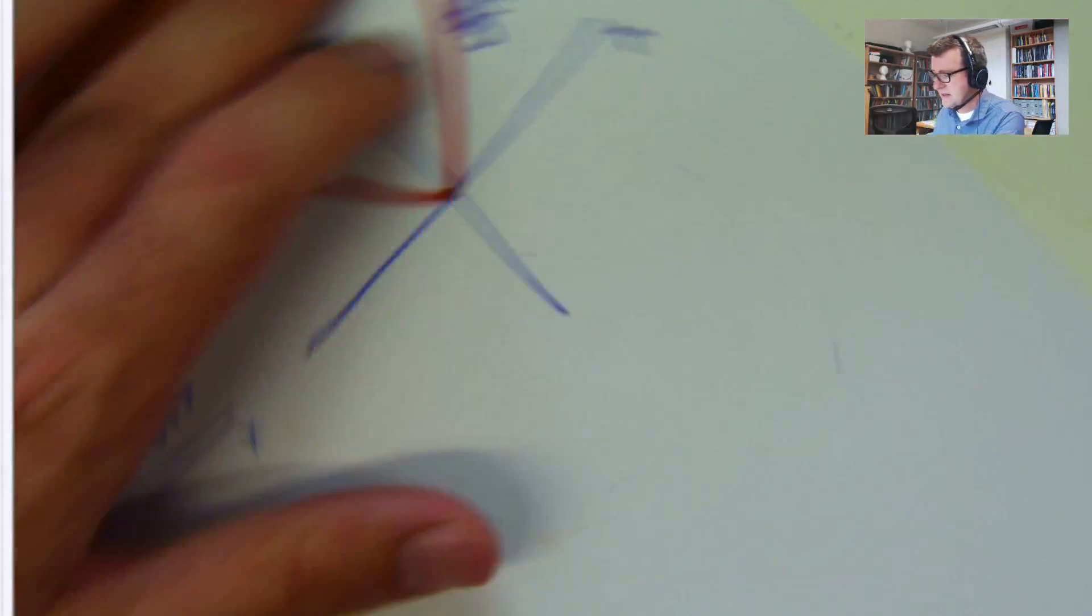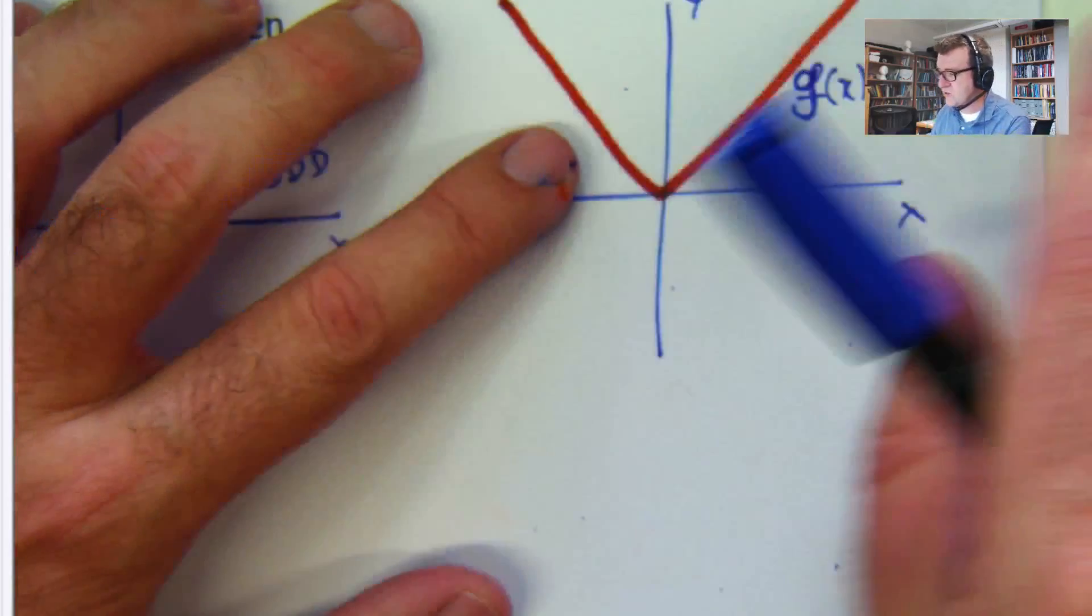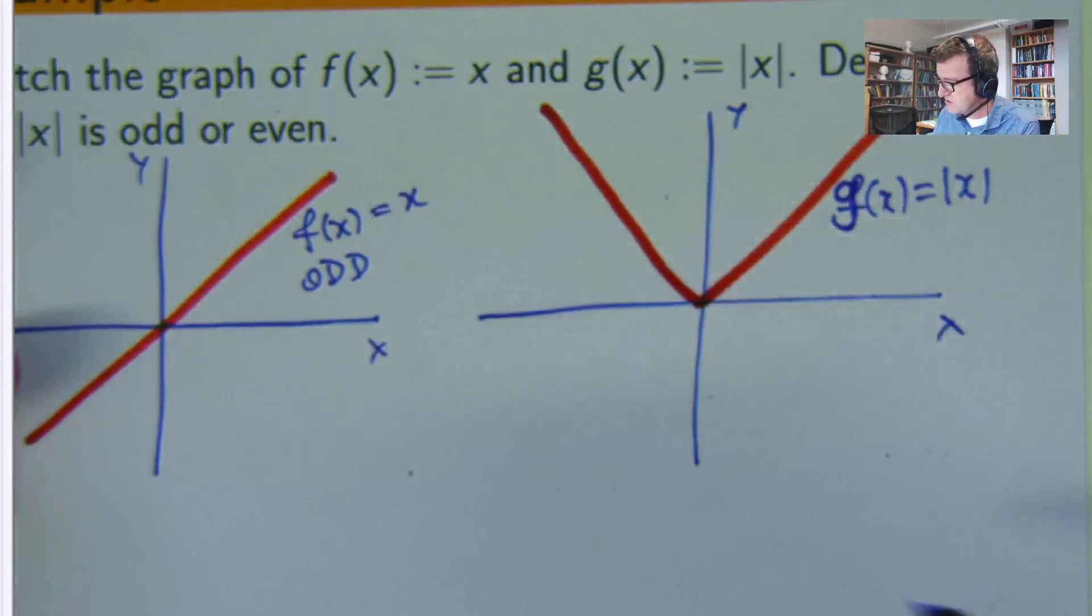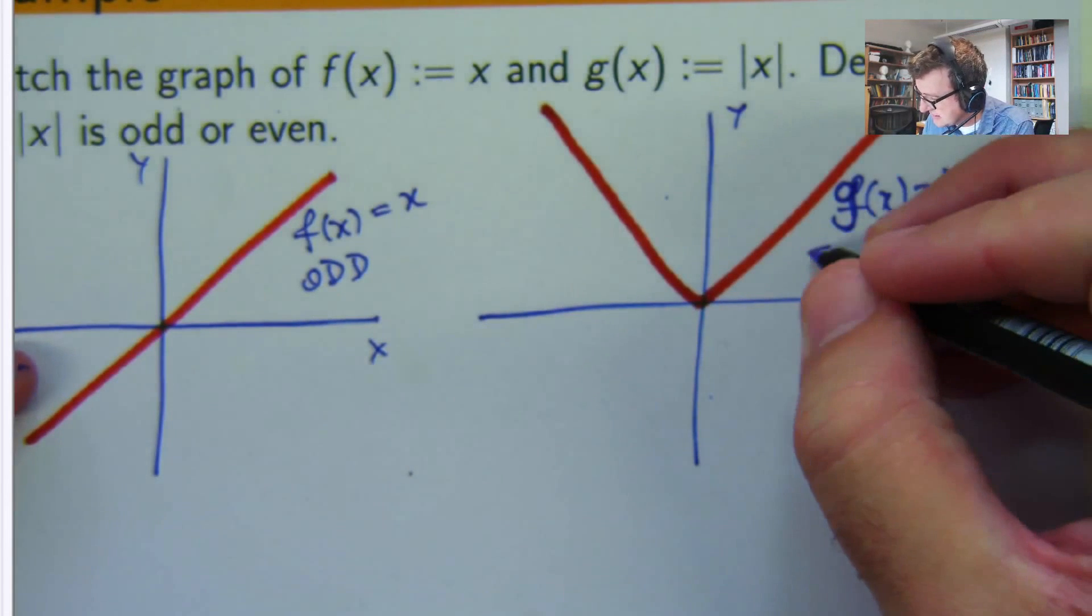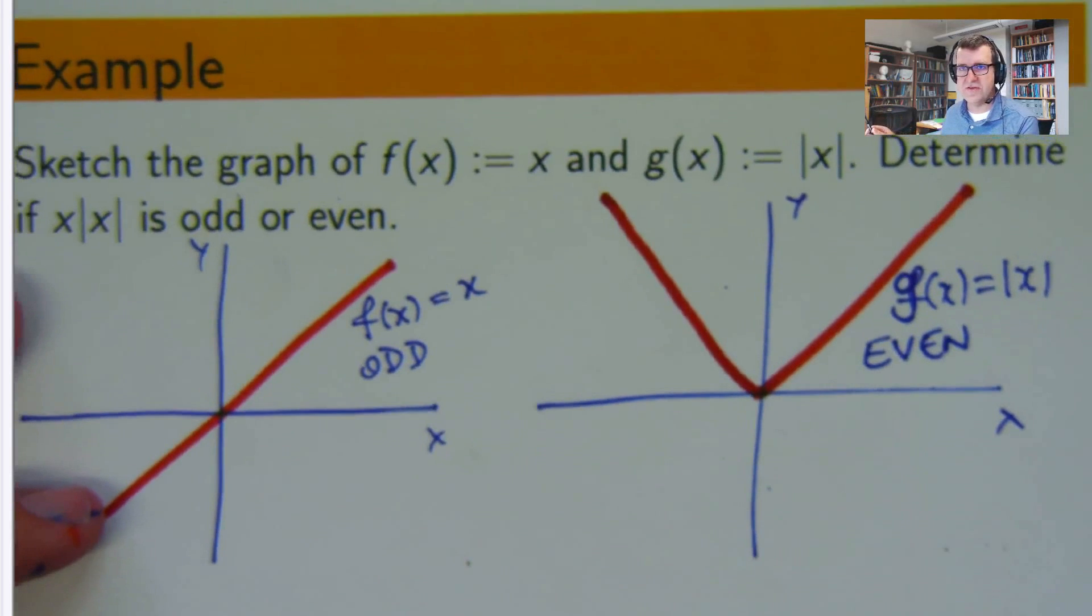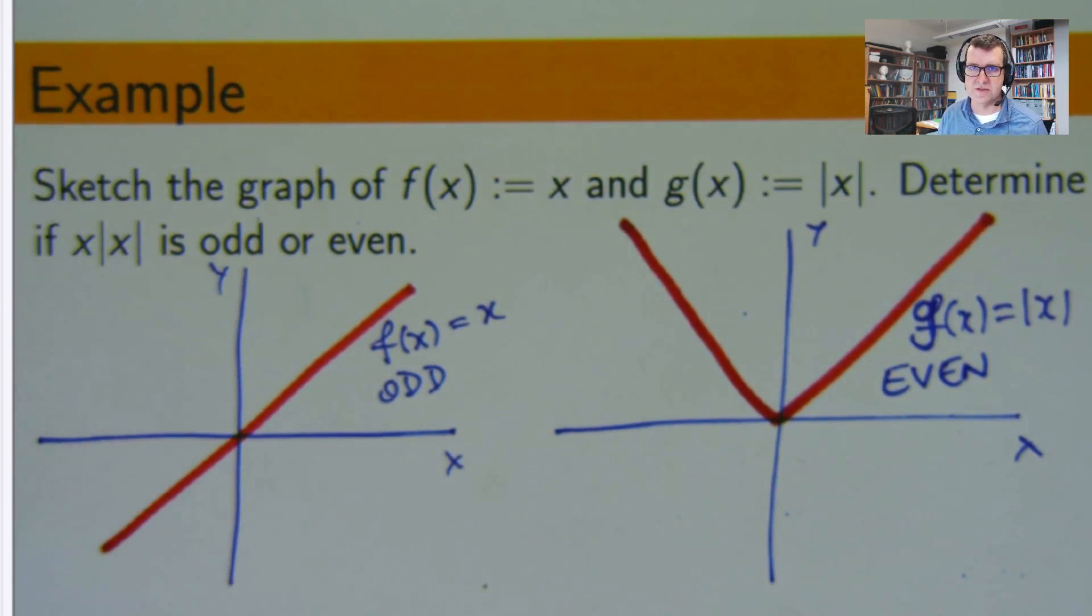We don't get the same graph, it's upside down now. But if we fold the page, or reflect it in the positive y-axis, then we get the same graph. So this one is even. Alright, so we've done the first part of the question.